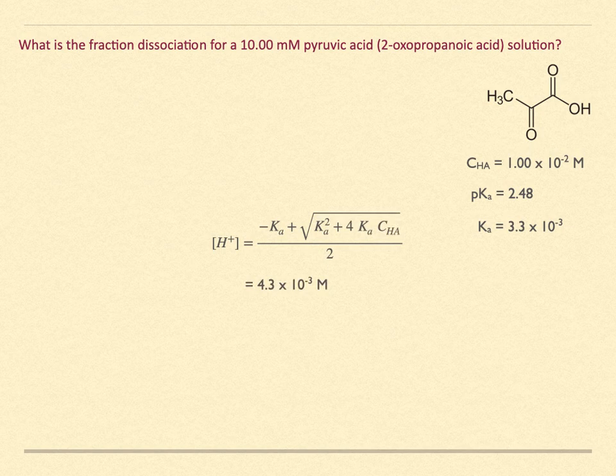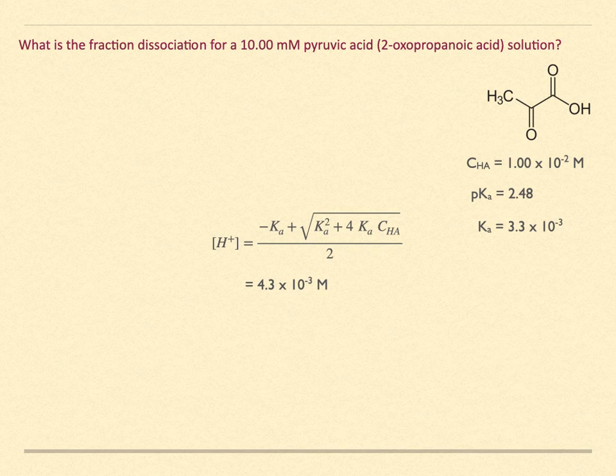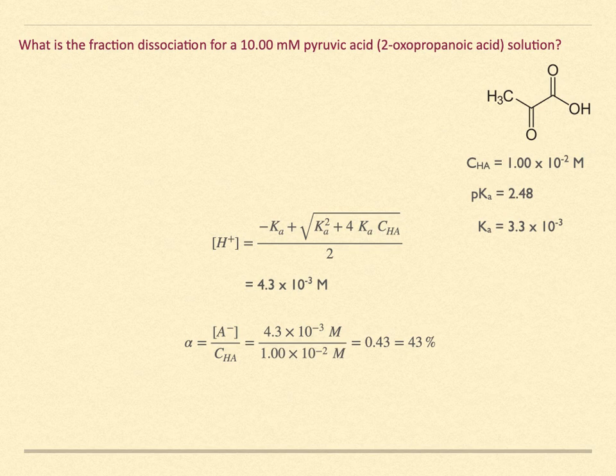Plug in the numbers into the quadratic solution to obtain the hydronium ion concentration of 4.3 times 10 to the minus 3 molar.